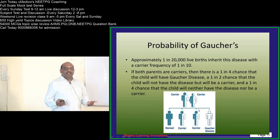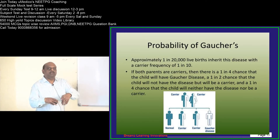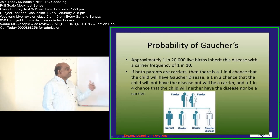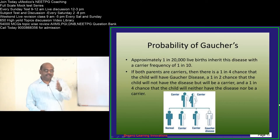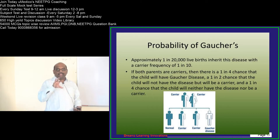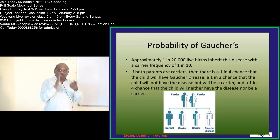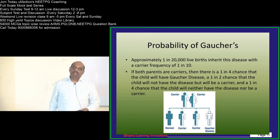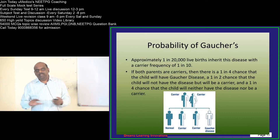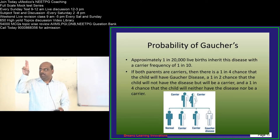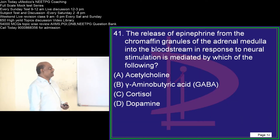25% will become homozygous for both abnormal alleles and show Gaucher's disease. In half of the cases, the child will be heterozygous and will be a carrier. A carrier has the abnormal Gaucher gene, and the 25% diseased also have an abnormal gene. So, 50% carriers plus 25% diseased makes 75% having that abnormal gene, and 25% will be free from any abnormal gene when two carriers marry.